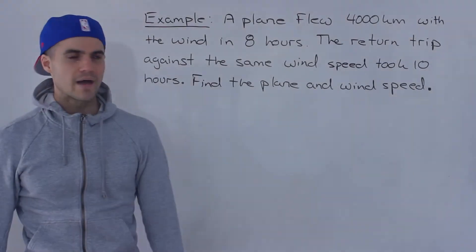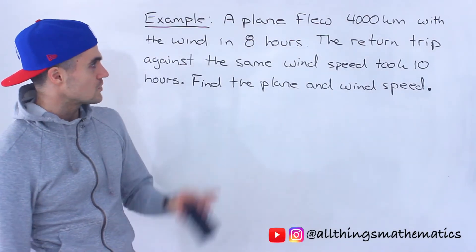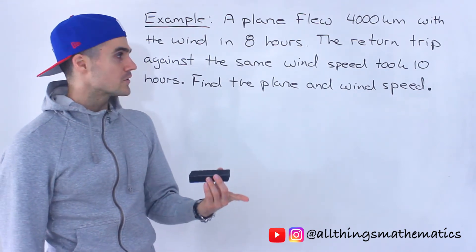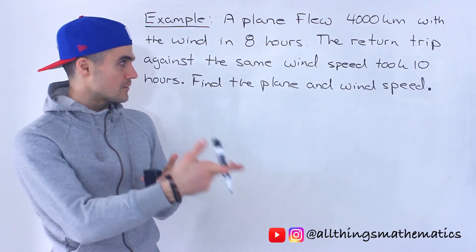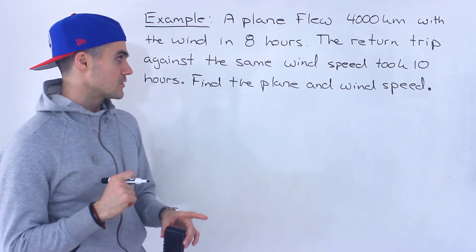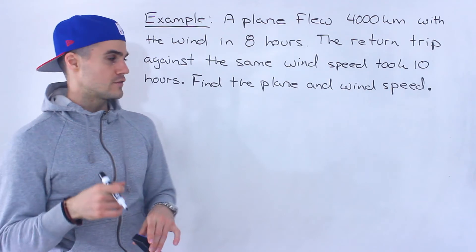What's up everyone? Patrick here. Welcome back. Moving on to the next question. So a plane flew 4,000 kilometers with the wind in eight hours and then the same trip, the return trip, against the same wind speed took ten hours and we have to find both the plane and the wind speed.